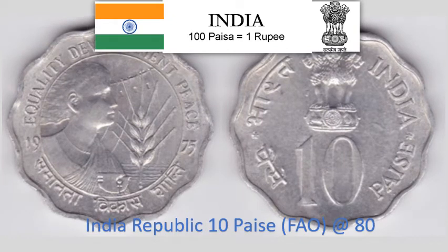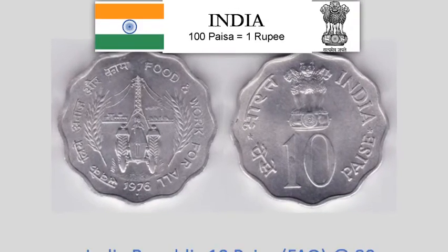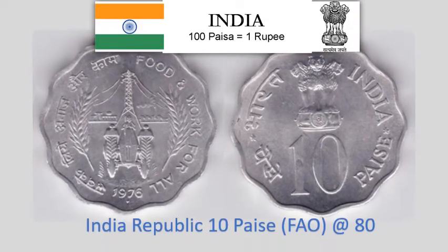India Republic 10 Paise 1975 — Circulating Commemorative Coin, FAO Planned Families, Food for All — Women's Year. 2.3 gram Aluminium scalloped coin with 12 notches, 26 mm diameter. Krause Reference No. 29. Approximate market value Rs. 80.